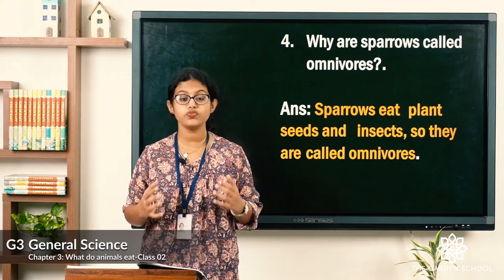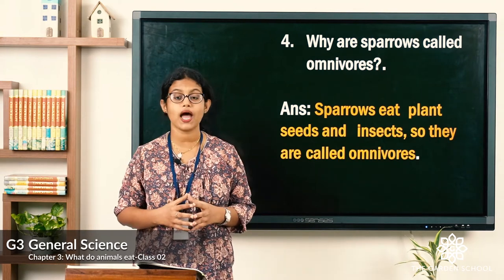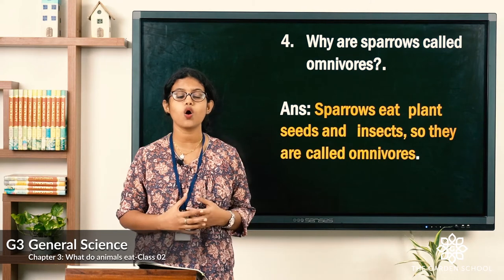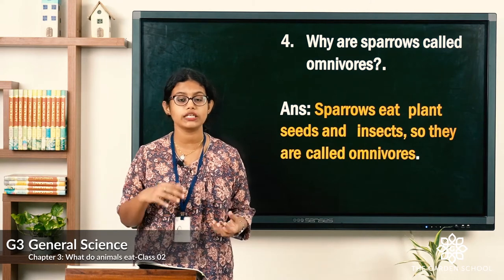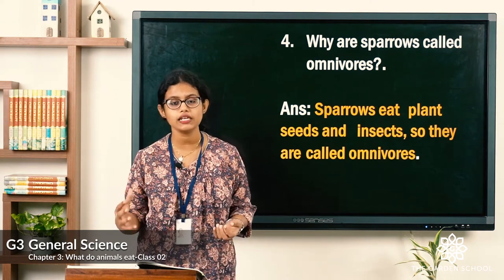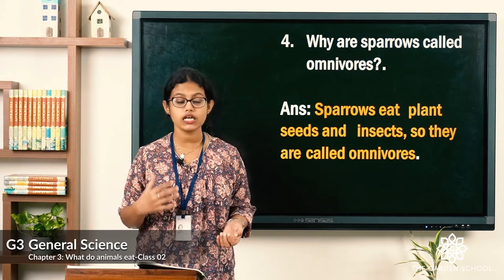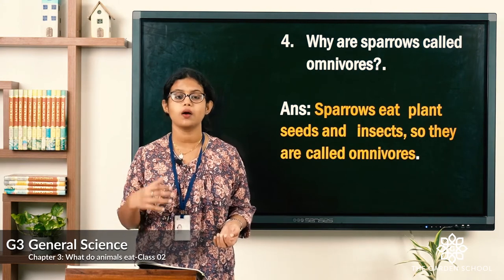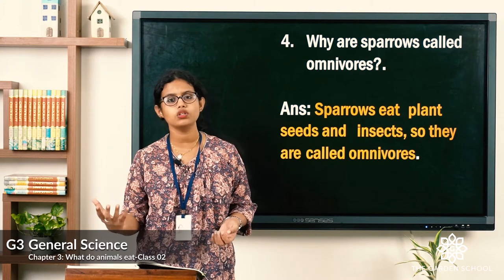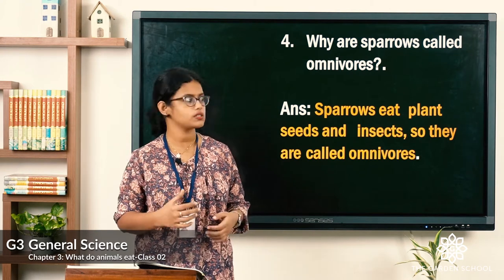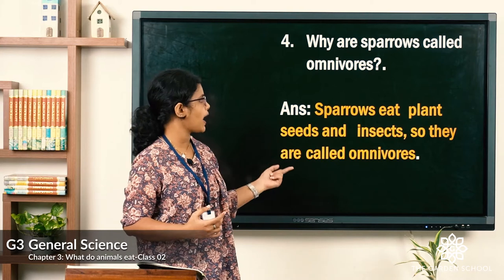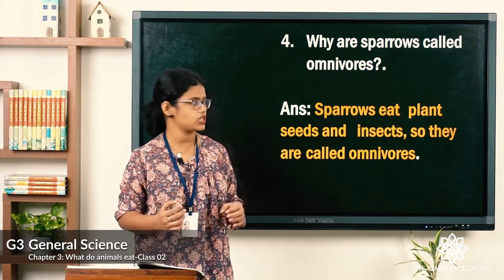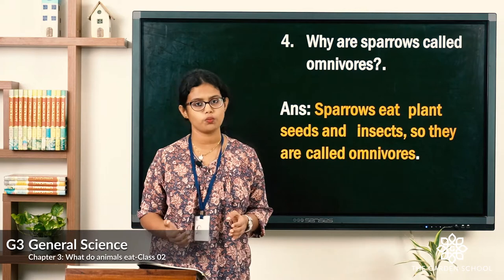Fourth: why are sparrows called omnivorous? An animal is called omnivore when it eats both plants and animals. Sparrows eat both plants and animals, so the answer is: sparrows eat plants, seeds, and insects — therefore they are called omnivores.